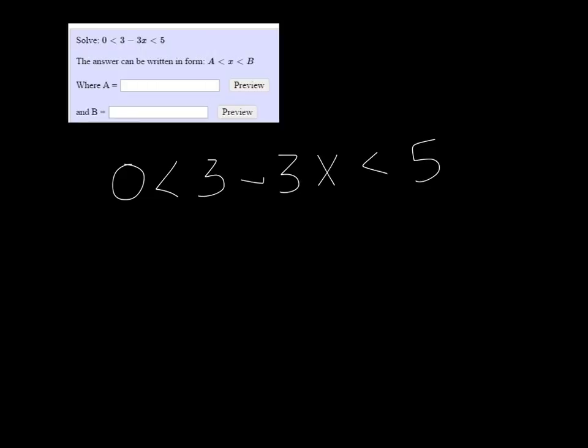So we need to concentrate on the middle where the variable is, and to get x by itself I want to subtract 3, but I need to do it from all three parts. So I get negative 3 is less than negative 3x is less than 2.